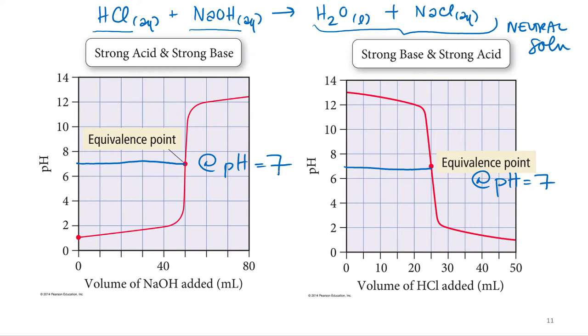So if we calculated the hydronium concentration at pH 7, at near the equivalence point, it would be 10 to the negative seventh. So hydronium concentration is 1 times 10 to the negative seventh molar. Is 1 times 10 to the negative seventh a big number or a small number? Small number.